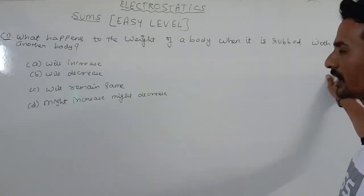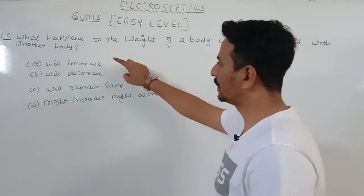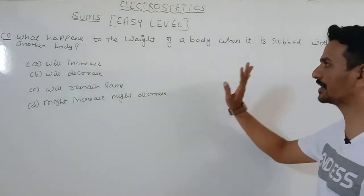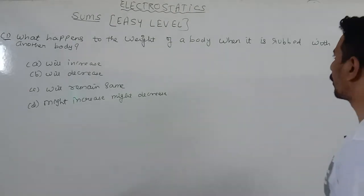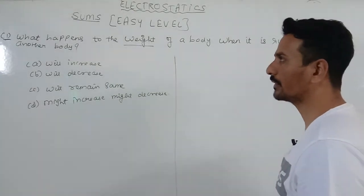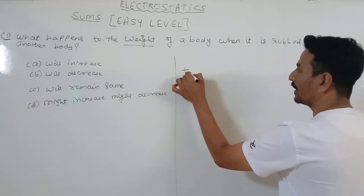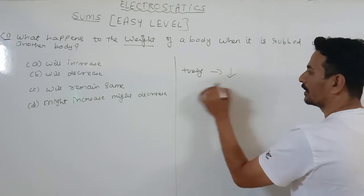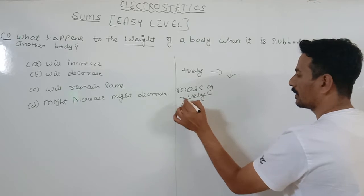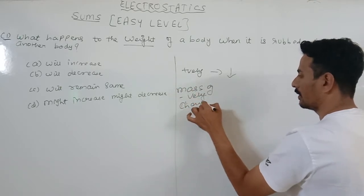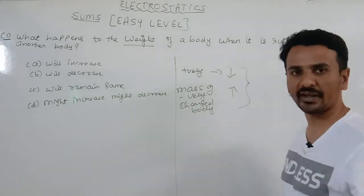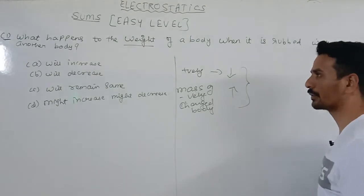The first MCQ: what happens to the weight of a body when it is rubbed with another body? The options are: will increase, will decrease, will remain same, might increase, might decrease. As discussed in the previous video, the mass of a positively charged body will decrease, and the mass of a negatively charged body will increase, because one body is losing electrons and another is gaining electrons.